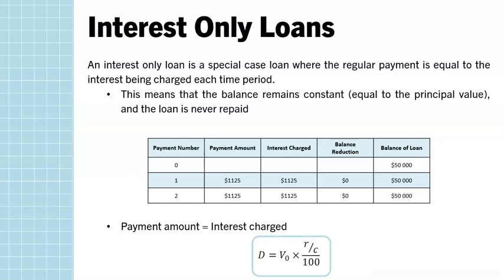The interest is being charged but the payment amount is equal to it, so we can see in this amortisation table that the balance of our loan doesn't actually change. The amount of interest being charged is equal to the payment, so the principal reduction is zero, meaning for the entire length of that loan the balance will remain at its starting point.